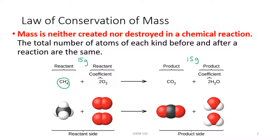Mass should never be lost in a chemical reaction. How we show this when writing chemical reactions is we balance our equations. We balance them using coefficients, which represent numbers out in front of certain species, such as the 2 out in front of the oxygen or the 2 out in front of the water. We're trying to represent the same number and type of atoms on the reactant side as on the product side.